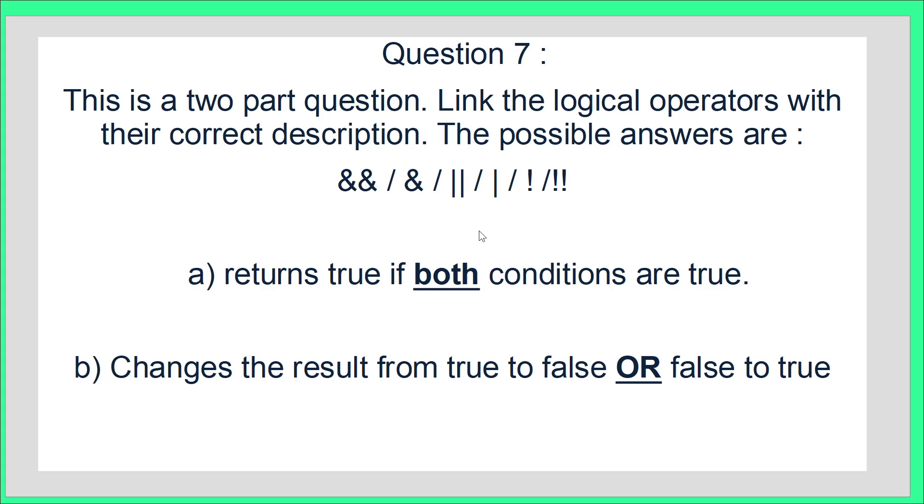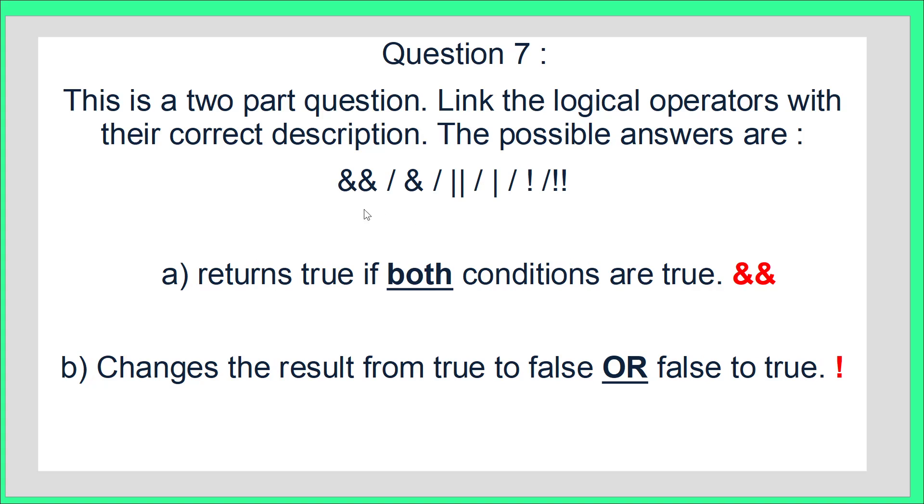Question 7 is looking at logical operators. You have to link the definition of operators with the symbol. The Java MTA often tests whether you get confused about whether it's one or two symbols. Hopefully you've paused the video and got an answer. If both conditions are true, we have the double symbol that means AND, and this symbol means the NOT statement for that logical operator. If you're unsure what logical operators are, please check out that video in the playlist.